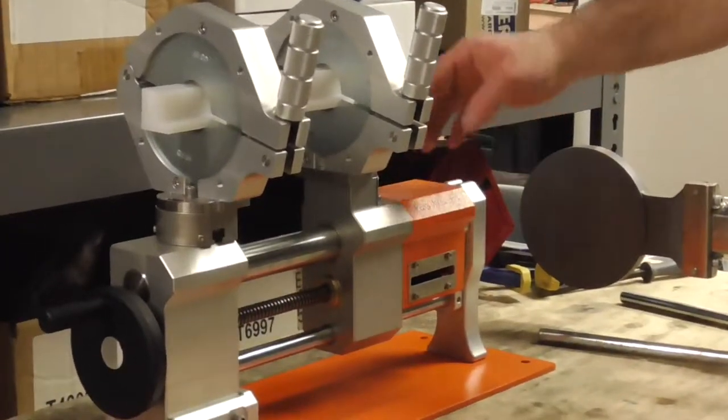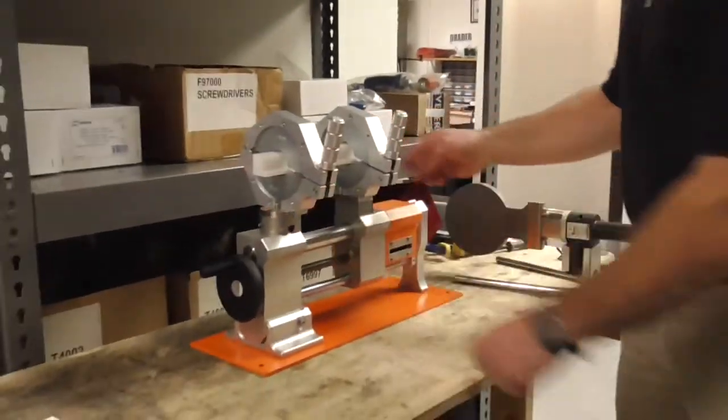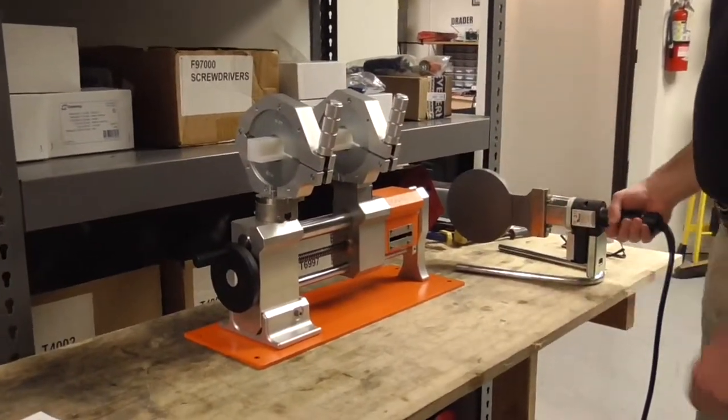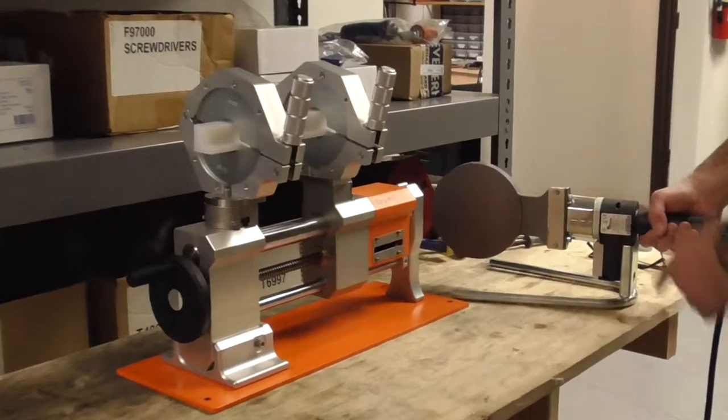We're going to use our EasyWeld 110 butt fusion machine. You can see the bars are clamped in there. What we'll do is we'll bring them together with the heat plate, the hot welding plate.